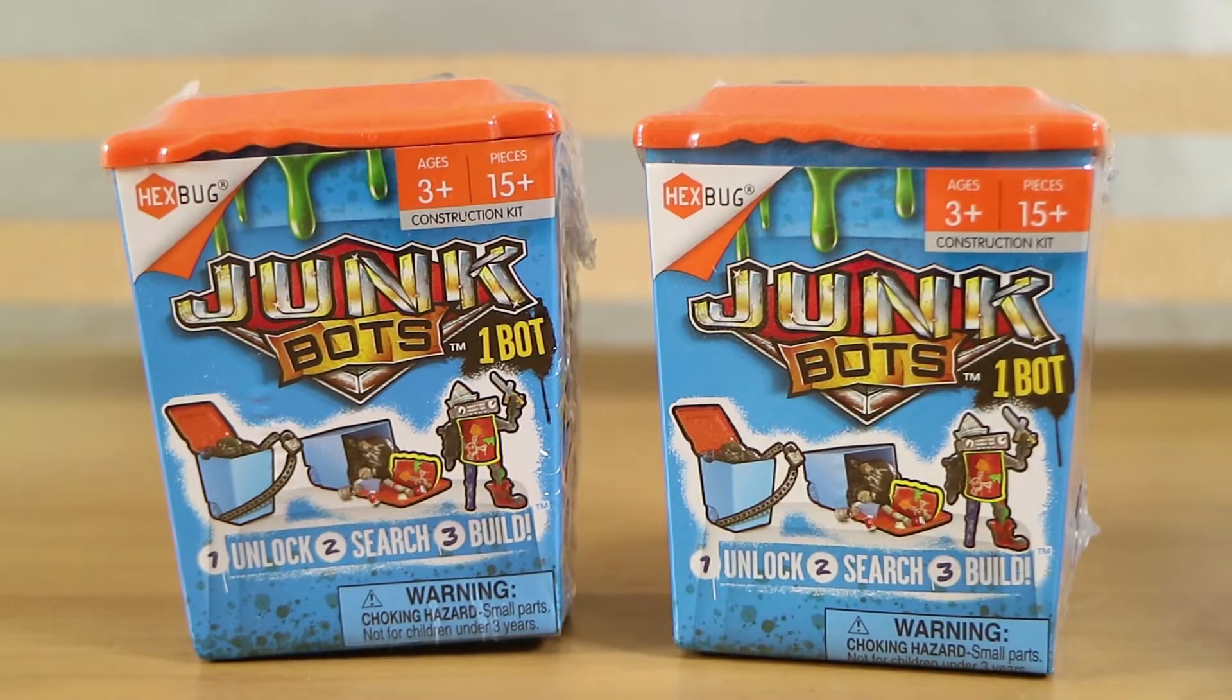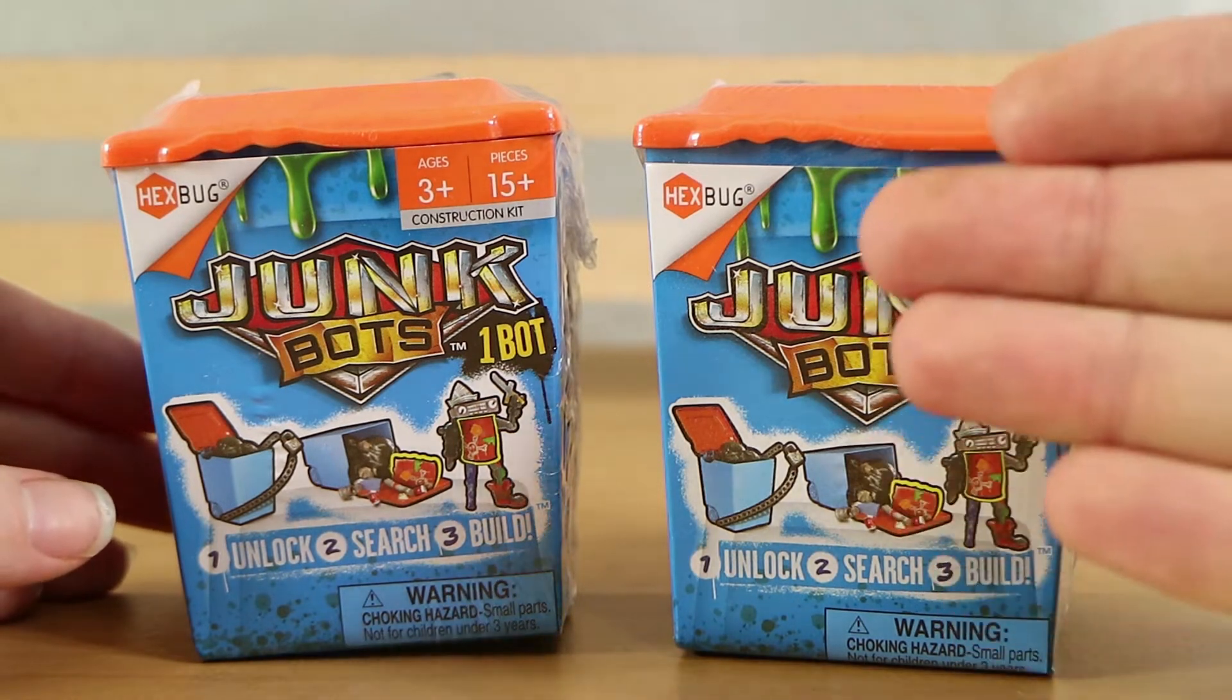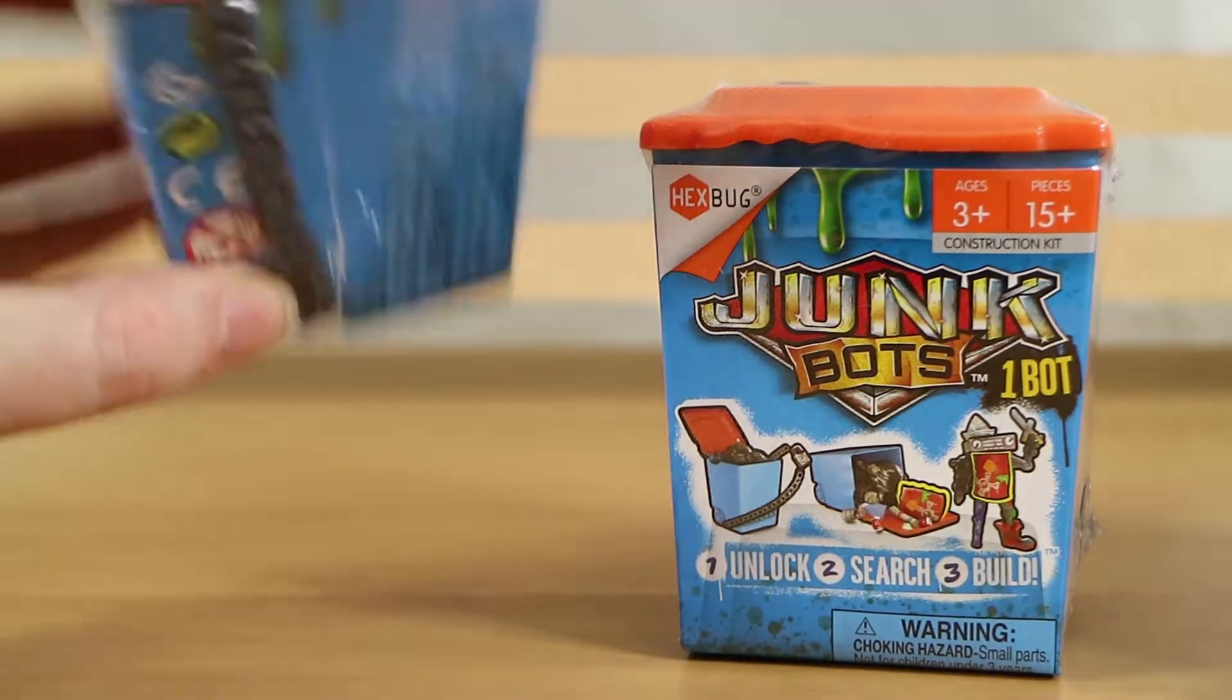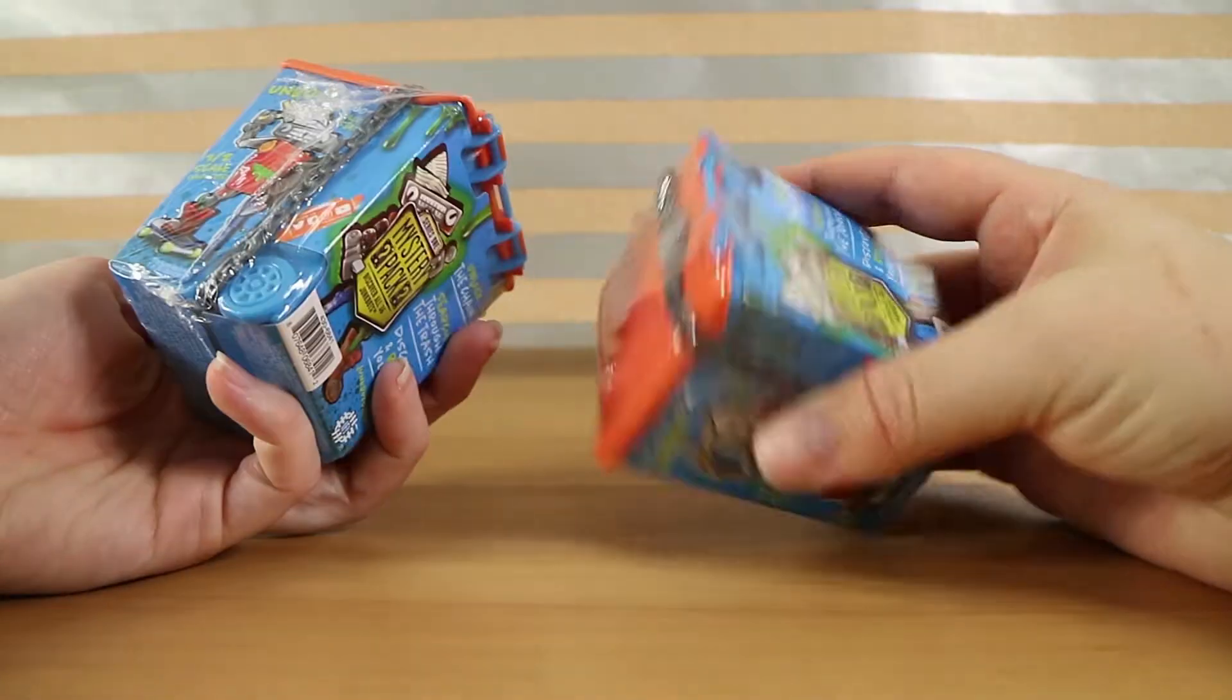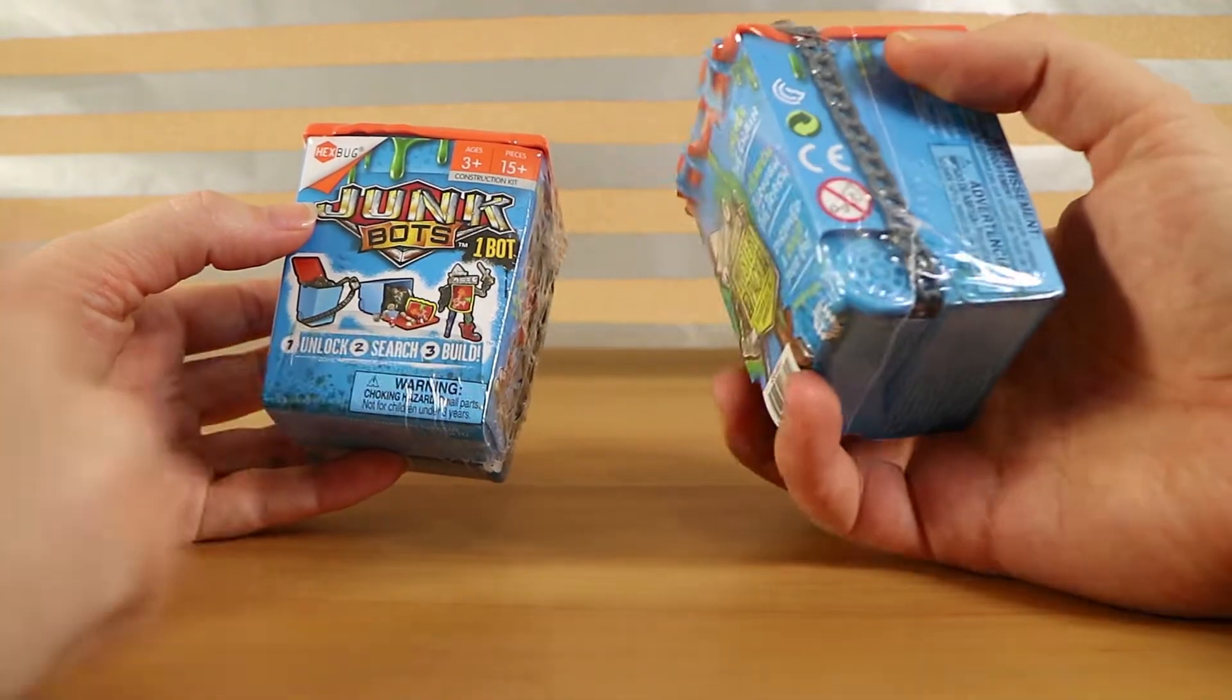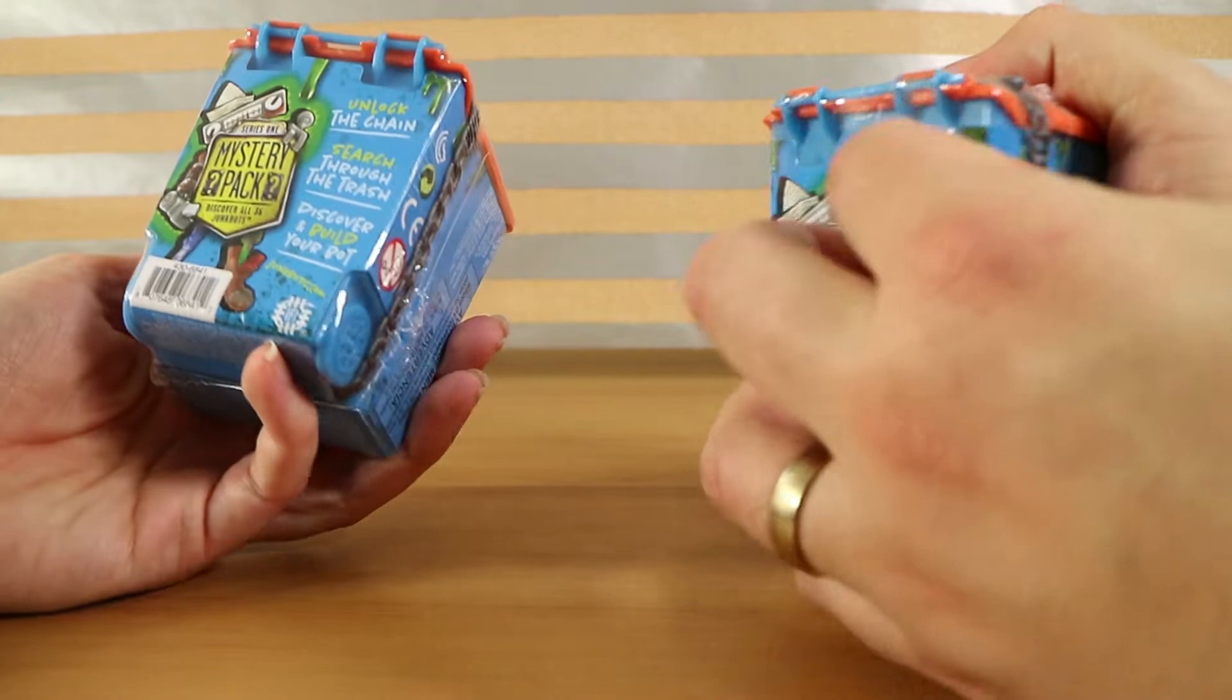So this is the one pack or one bot pack. There's also a larger pack as well as I think some sort of play set. We tried to get the bigger one but by the time we went to go order it, it was sold out or not in stock. They come in like a little rubbish bin kind of container that has a chain with a padlock locking it. It's a pretty cool look. I like it. This is series one.